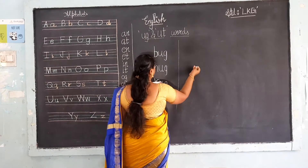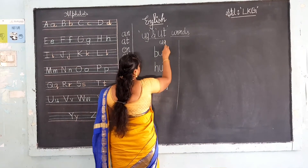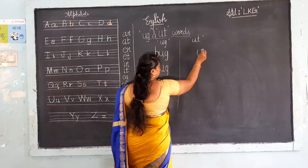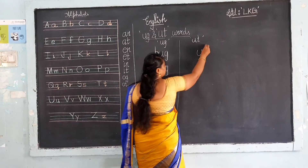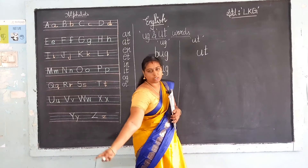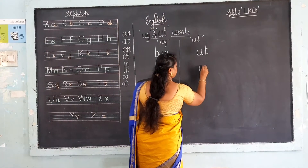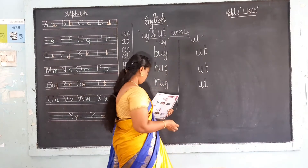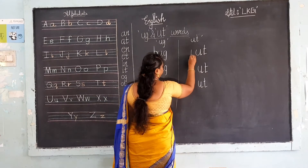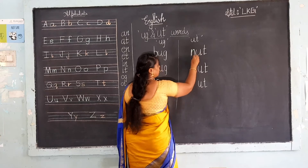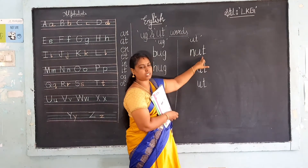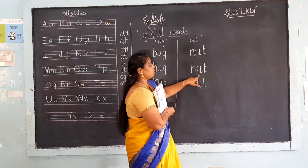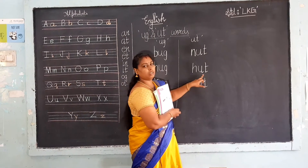The next one — UT words. This is UG and this is UT words. What is the sound of U? U, T — UT. Now N — what is the sound of N? N, U, T — nut. H, U, T — hut, hut.